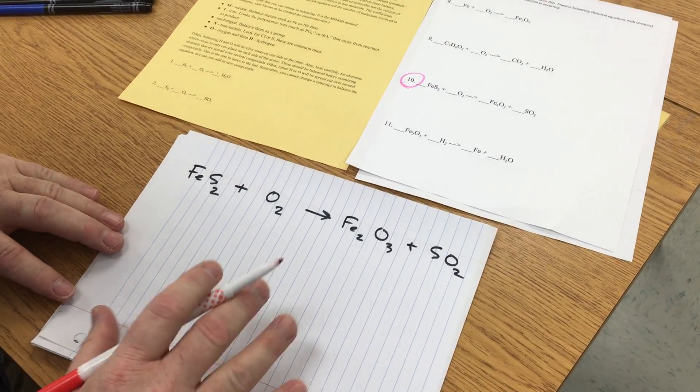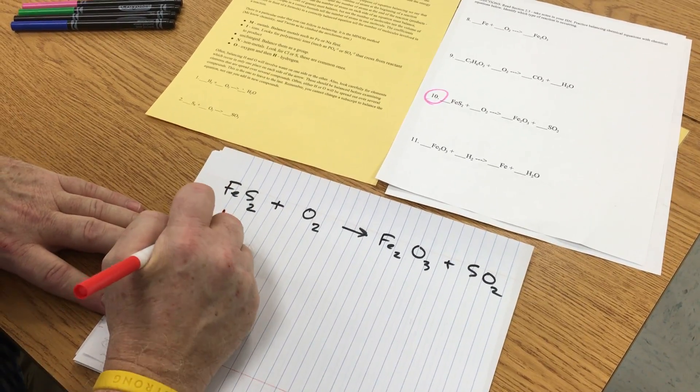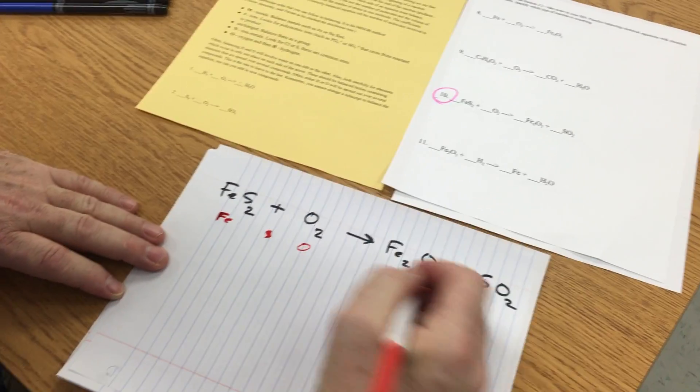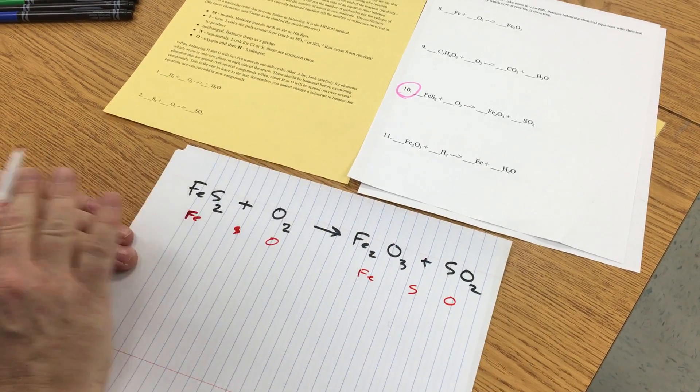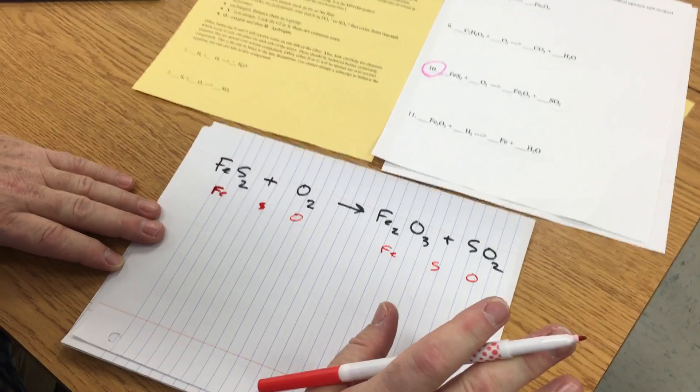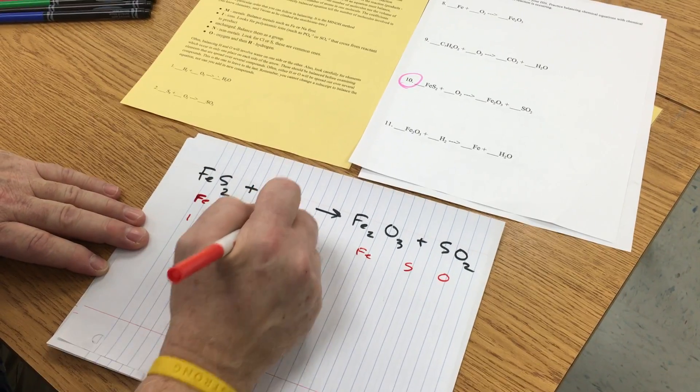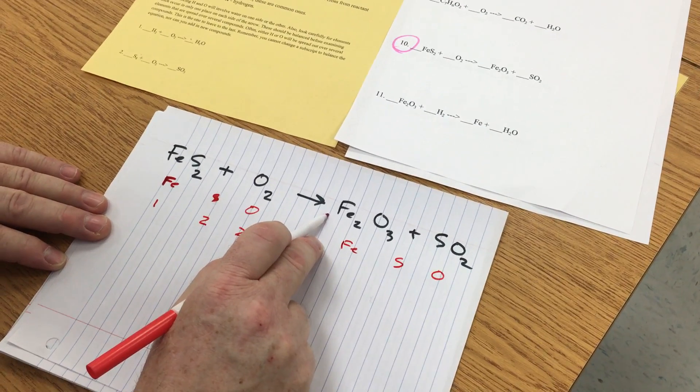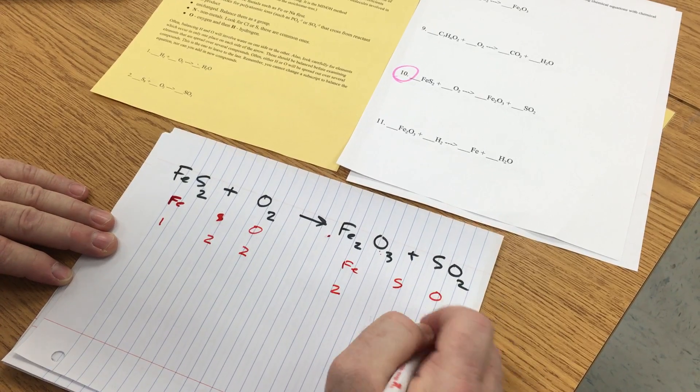So the first thing you do always is you need to count your atoms. I'm going to write Fe, S, and O, and Fe, S, and O. Remember to keep them in the same order, it makes it a lot easier. So I have one iron, two sulfurs, and two oxygens on this side. On the product side I have two irons, three oxygens plus two which makes five, and then I have one sulfur.